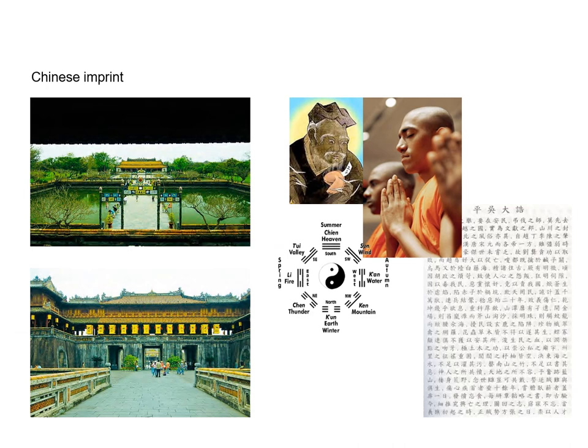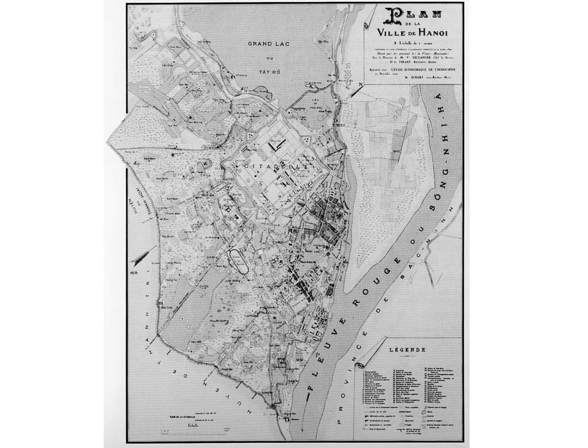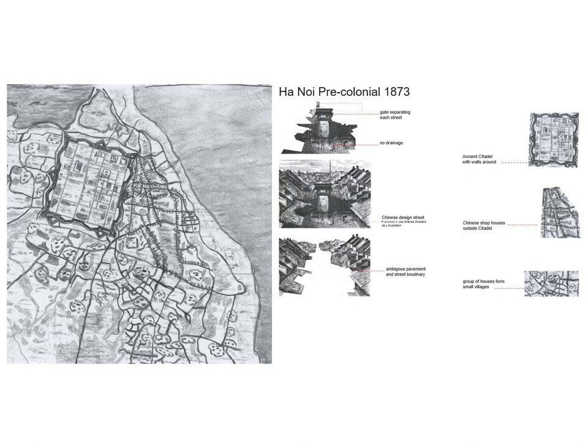Vietnam's cultural landscape is layered with several imprints. One of the most significant is the Chinese imprint, visible in architecture, urban layout, ancient writing, culture, belief and religion. Looking at an old map of Hanoi's citadel, we can see evidence of Chinese urban resemblances such as the citadel, gated streets and shop houses. The canal system was used for water detention and sewage, and groups of houses formed small villages.